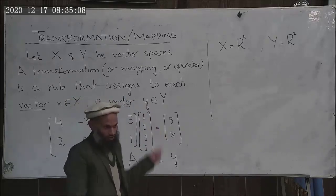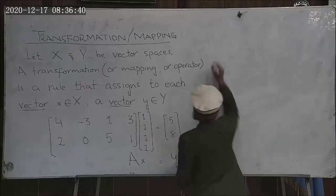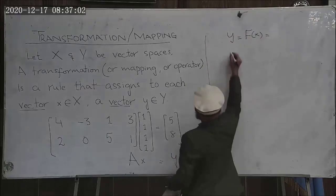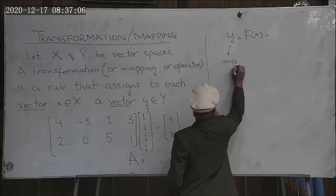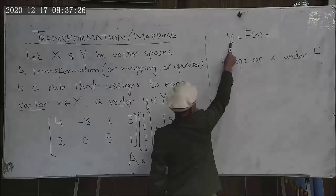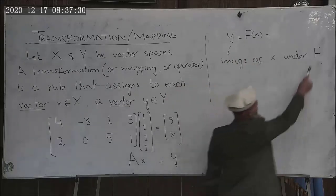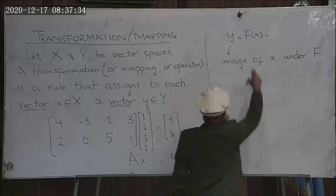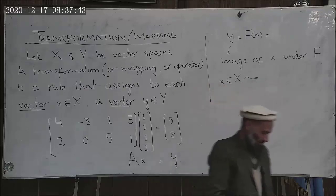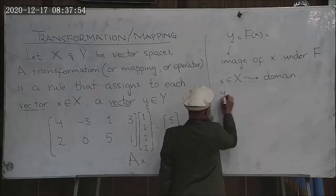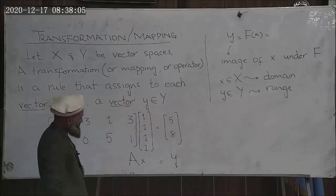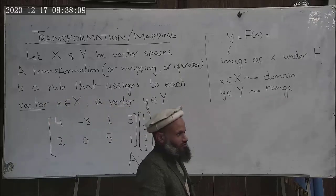These vectors are not necessarily column vectors or row vectors. A transformation is generally represented in the form y = f(x). This vector y is called the image of x under that particular transformation. The vector x belongs to space X, which is called the domain, and the space Y is called the range. In this particular transformation, the domain was R4 and the range was R2.